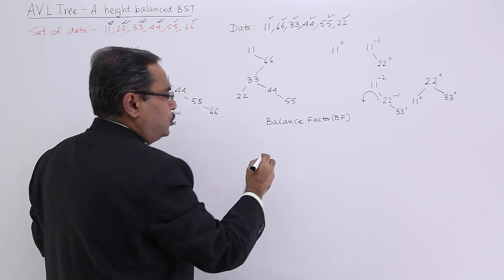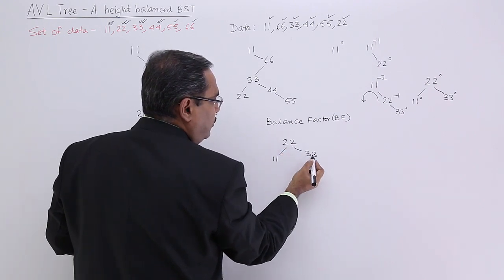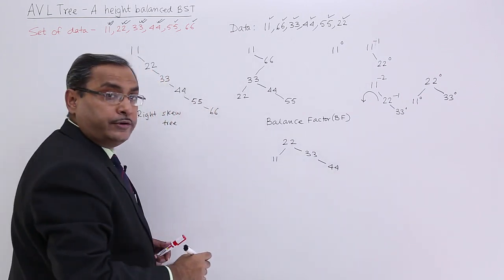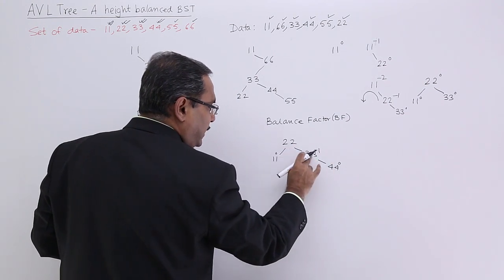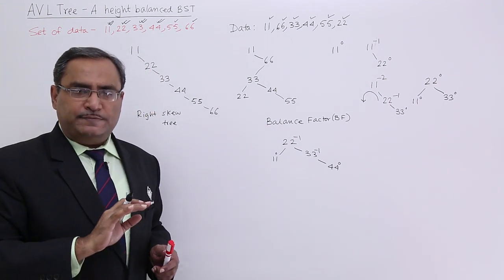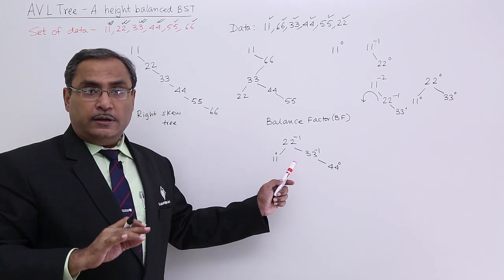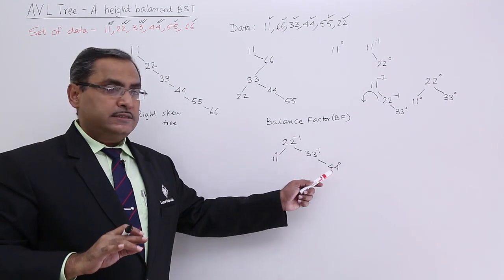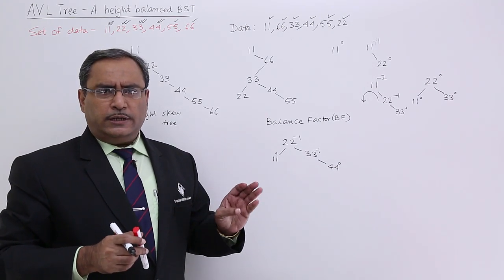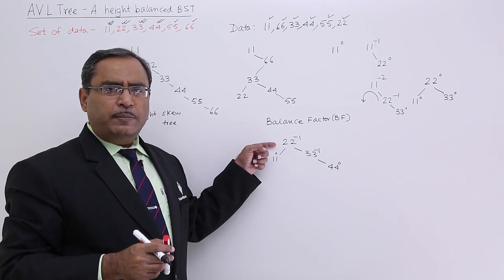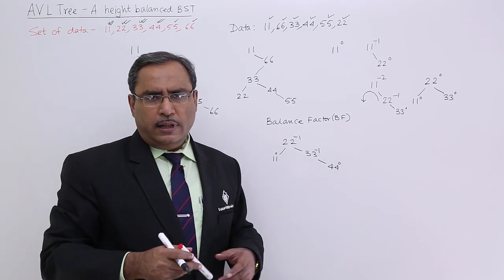Now we are going to insert 44. 22 is there, 33 is there, and 11 is there. 44 is greater than 22 and greater than 33, so it will be the right child of 33. Leaf nodes will have balance factor 0; for 33 it is 0 minus 1; for 22 it is 1 minus 2. There is no node with balance factor plus 2 or minus 2, meaning it is height balanced. For 4 data items, this binary structure cannot be expressed with lesser height.